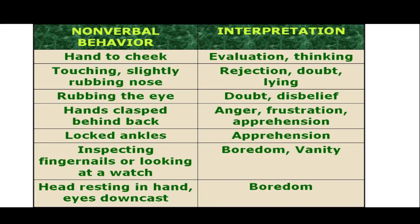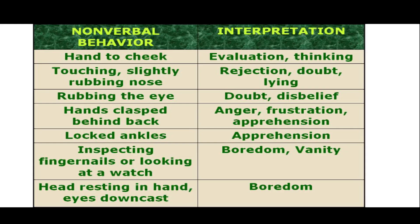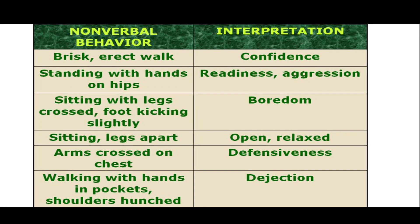Head resting in hand with eyes downcast can mean boredom — I showed a picture in the quiz indicating boredom. Brisk, erect walking indicates confidence, as opposed to slouching with the head slow, which indicates dejection. Walking with hands in pockets with shoulders hunched is dejection.